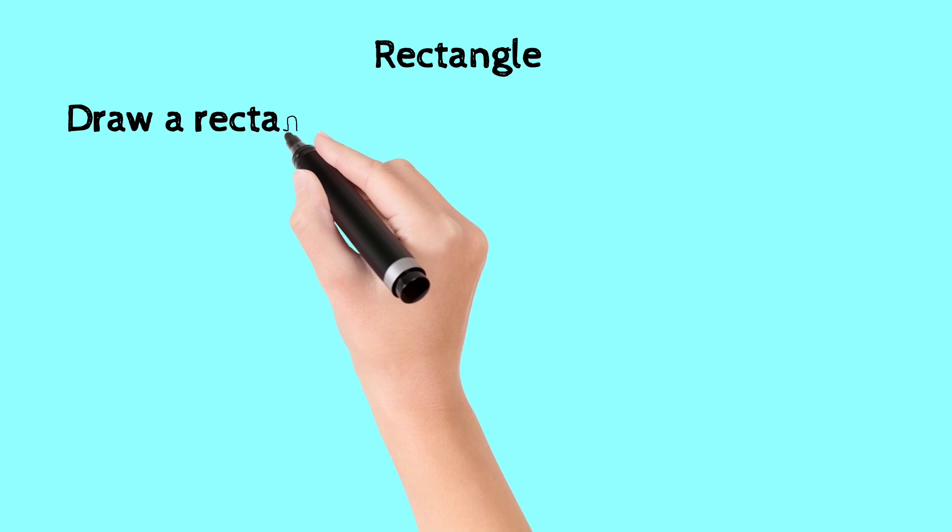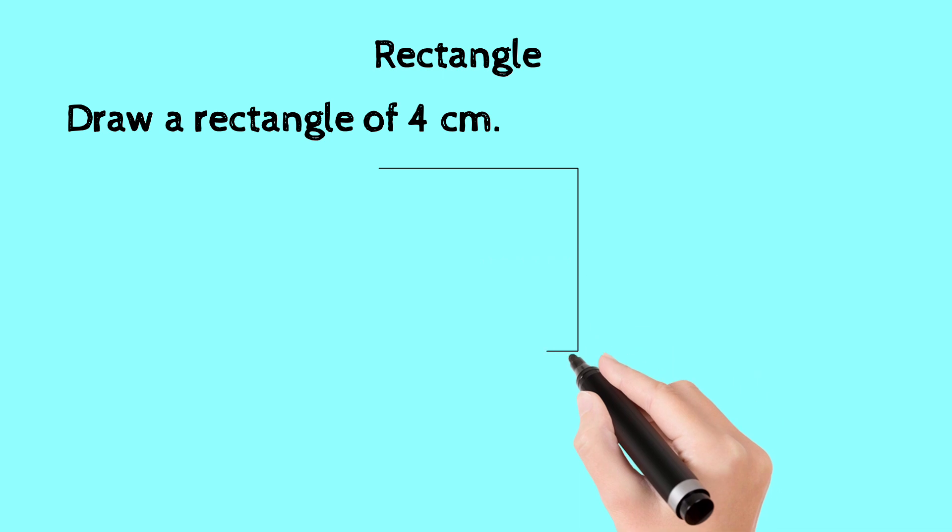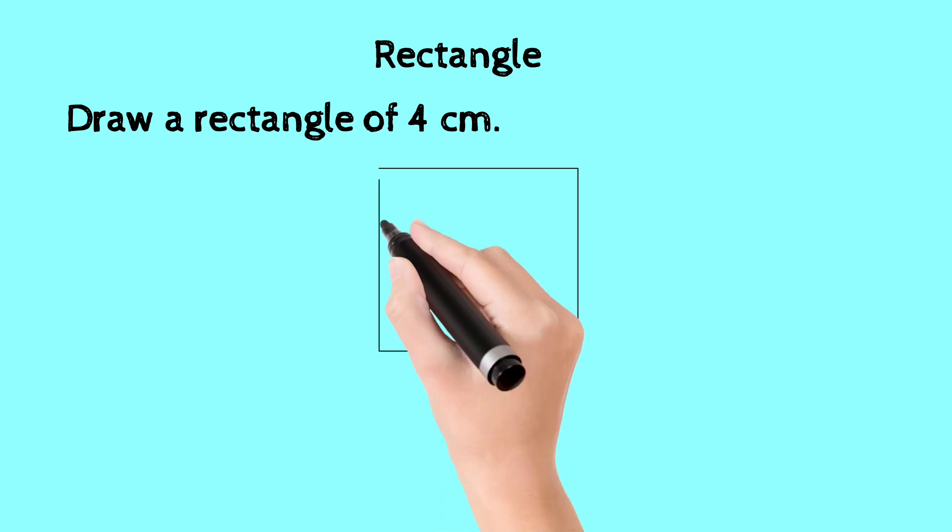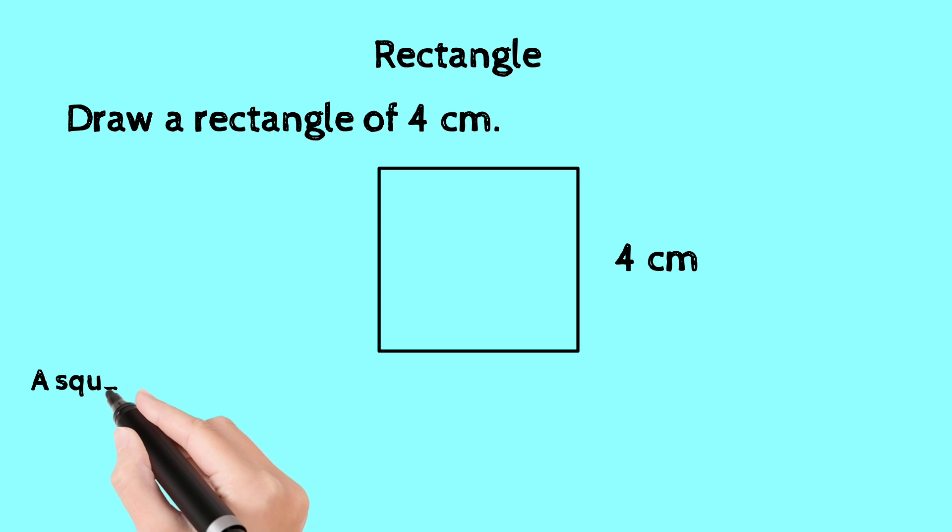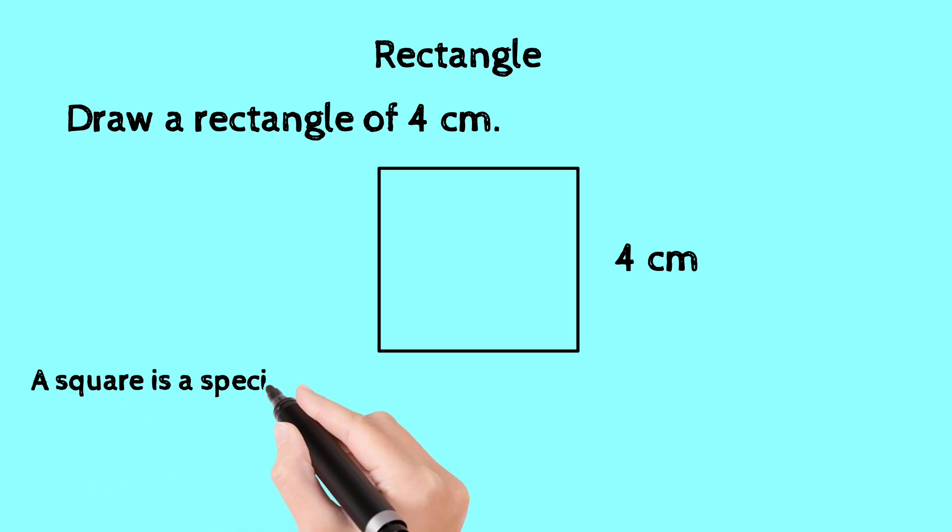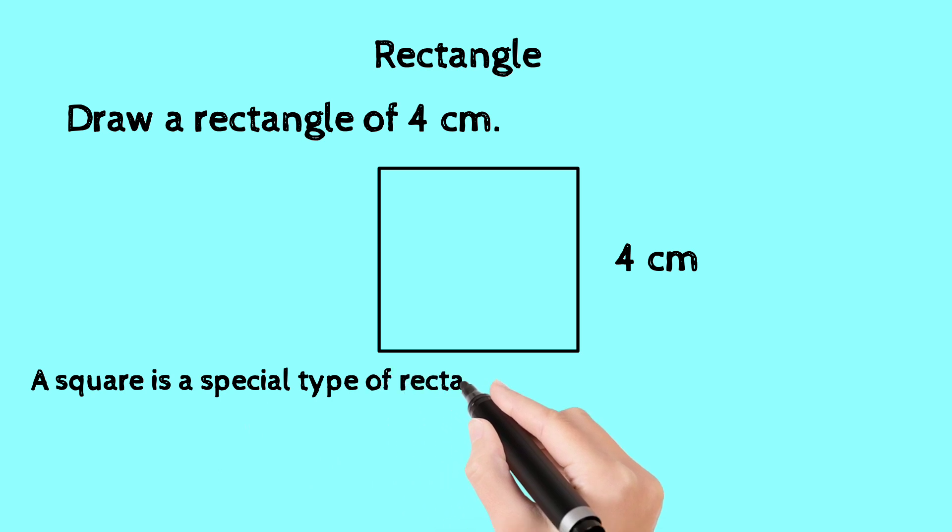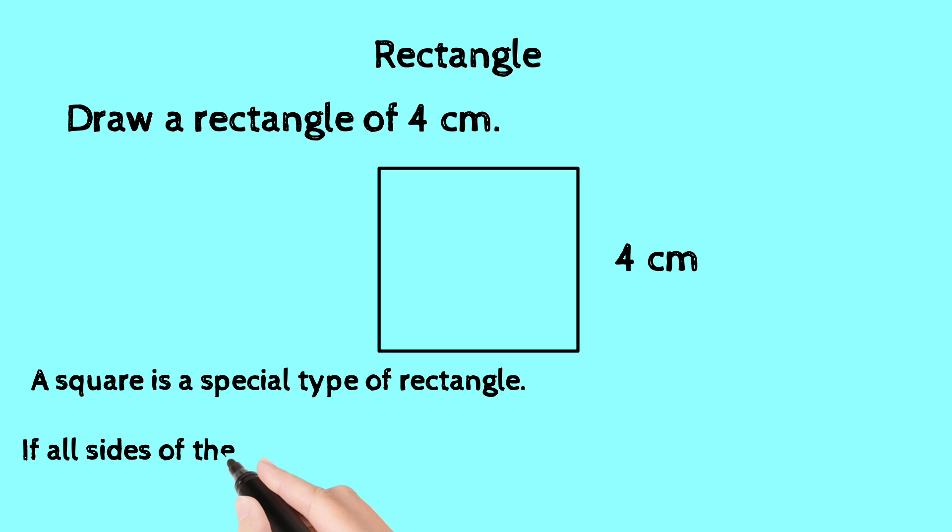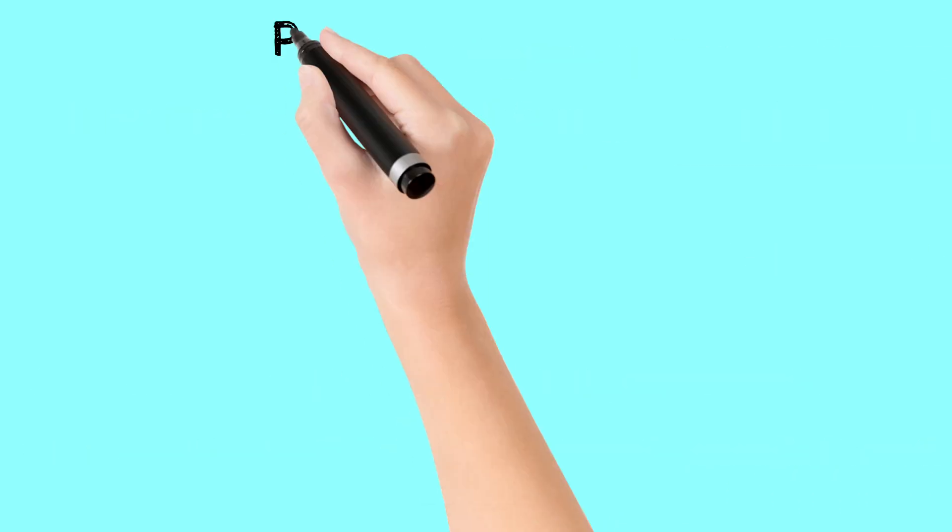See another example. Draw a rectangle of 4 cm. Here we have only one measurement given, which means all four sides are equal. The length of all four sides is 4 cm. A square is a special type of rectangle. If all sides of the rectangle are equal in length, then it is called a square.